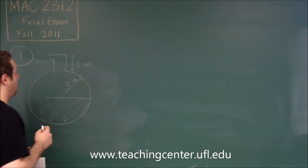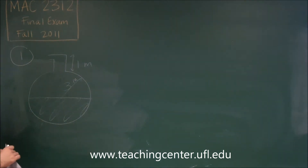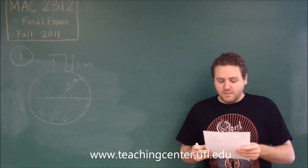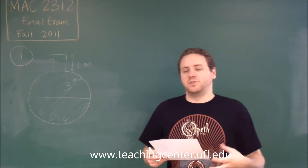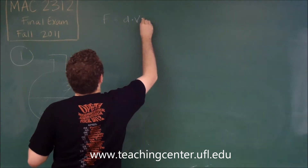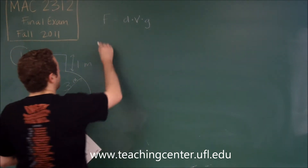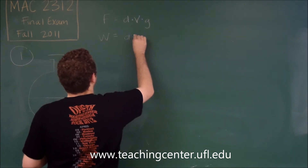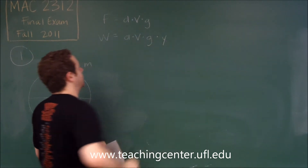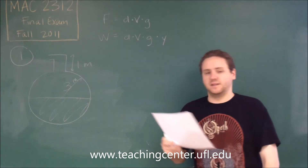To find work, we need a force and a distance. The force is mass times G (9.8), but instead of mass we have density and volume, so force equals density times volume times G — because density times volume gives you mass. Therefore, work equals density times volume times G times distance.